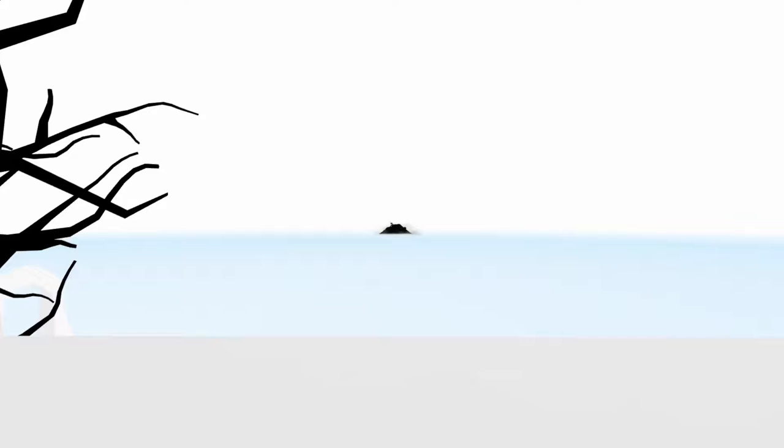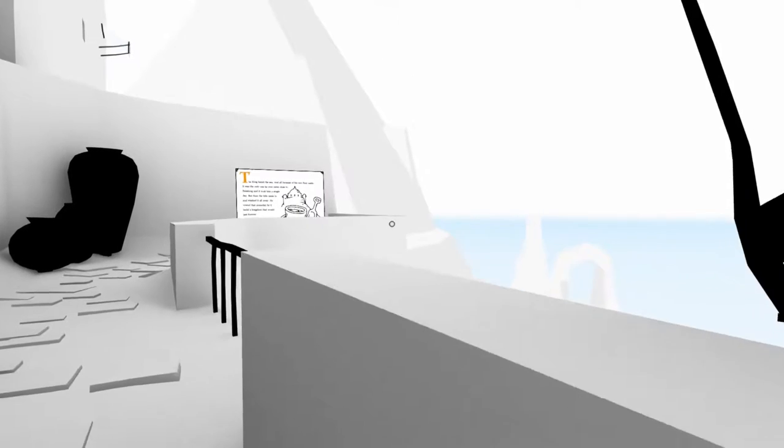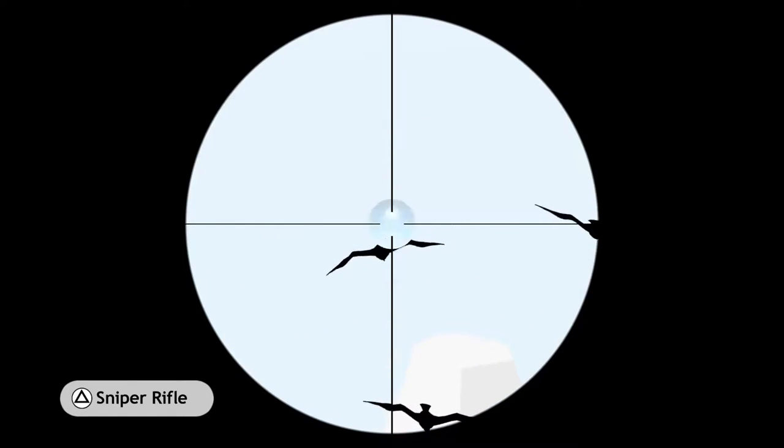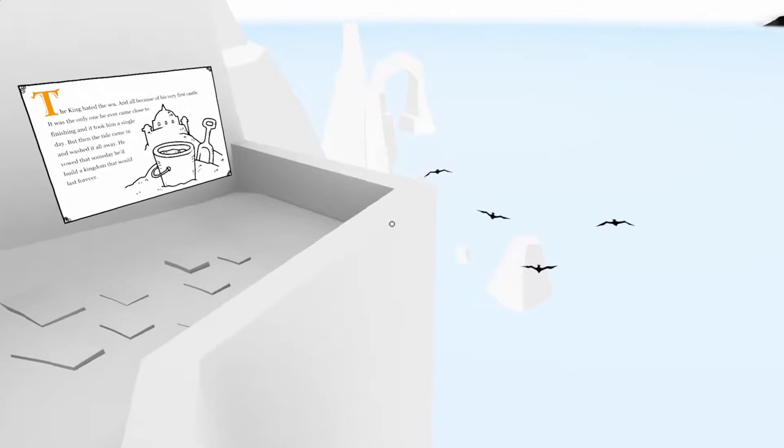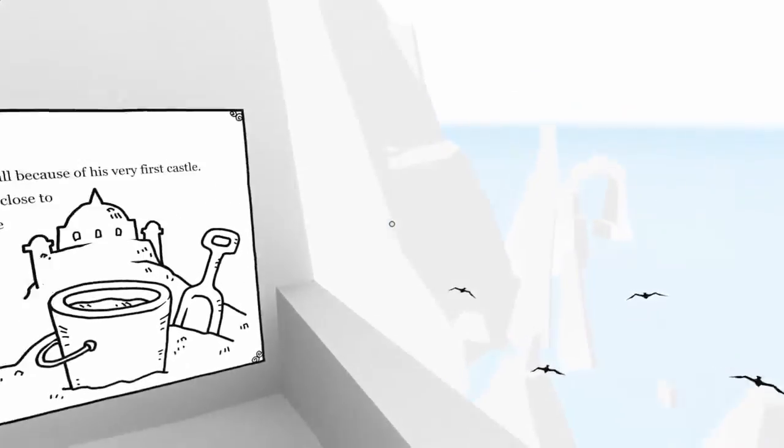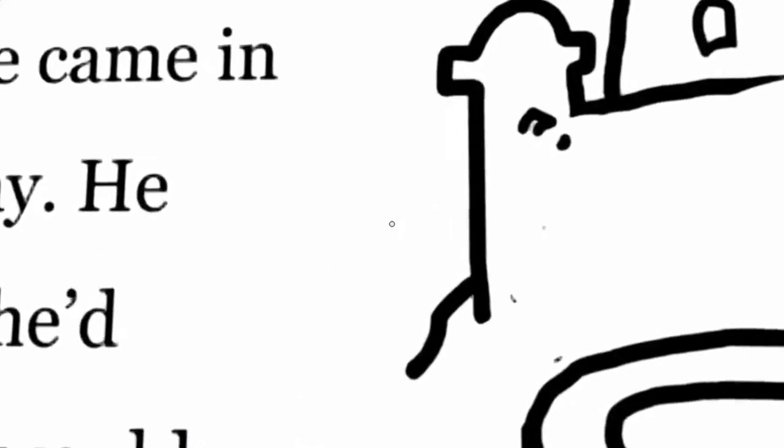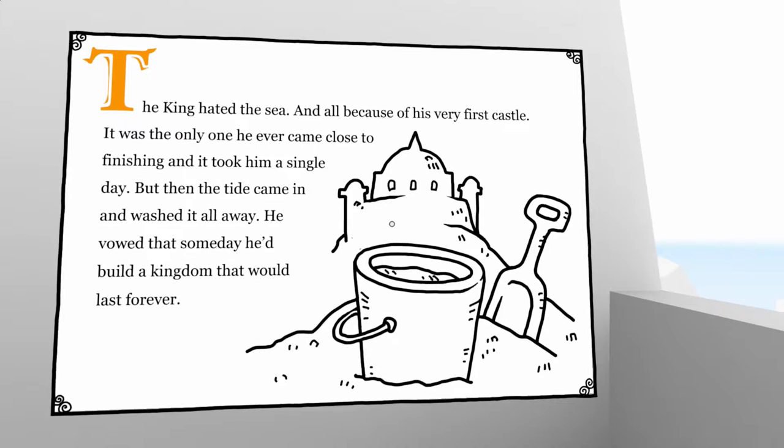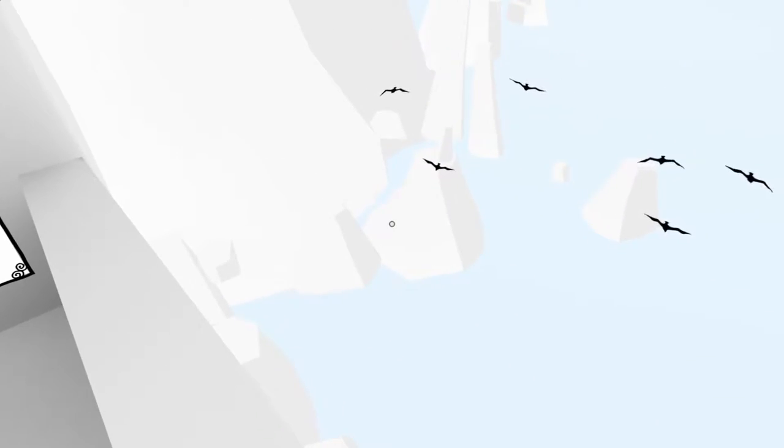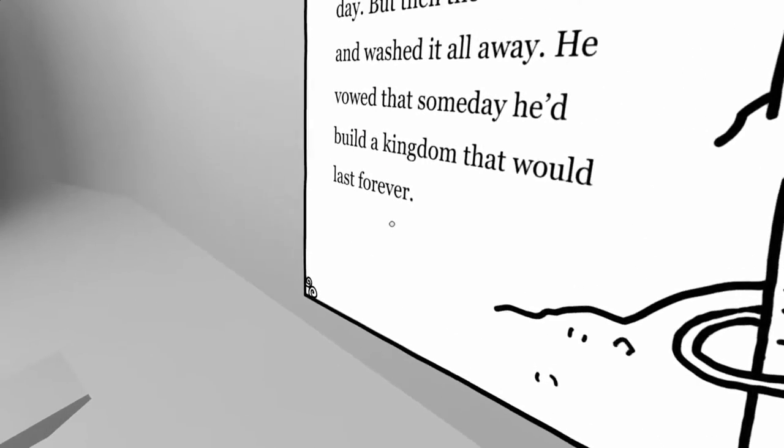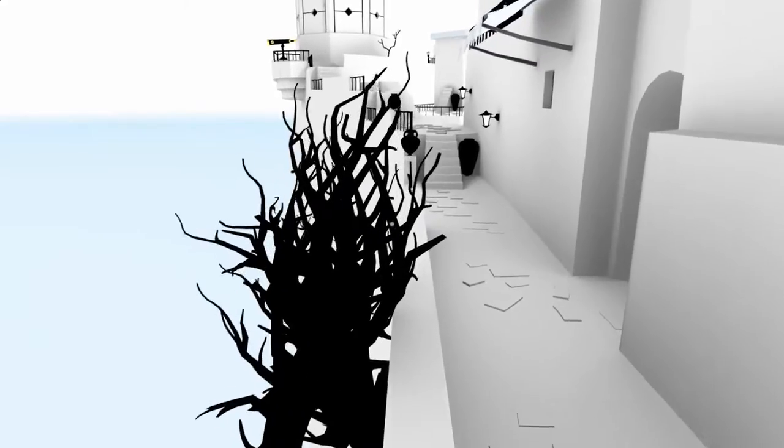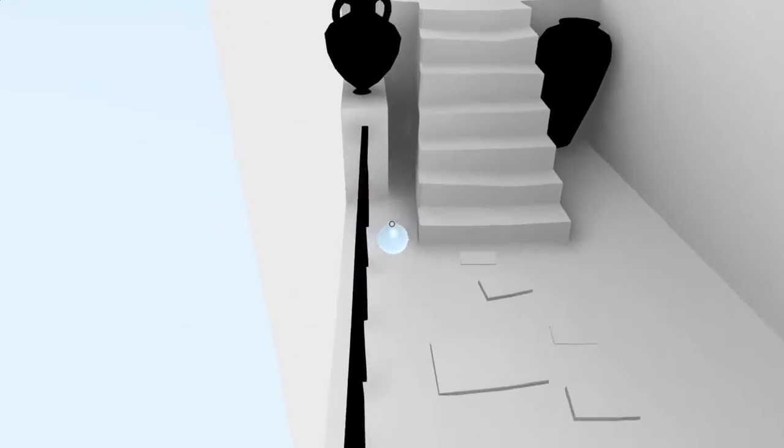What's that? Little island, the king thingy? See, there's always something to see or do, like jump off this cliff and die violently. Shoot the birds. Yeah! 360 no-scoped. Read it. The king hated the sea, and all because of his very first castle. It was the only one he had ever come close to finishing, and it took him a single day. But then the tide came in and washed it all away. He vowed that someday he'd build a kingdom that would last forever. I don't think he did a very good job at that.